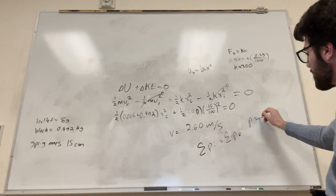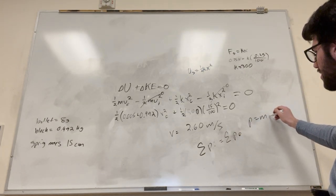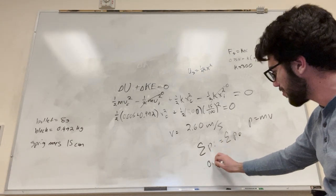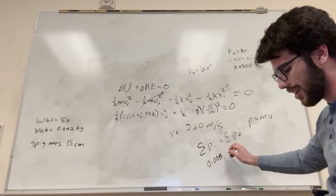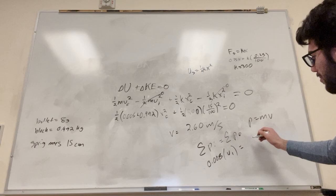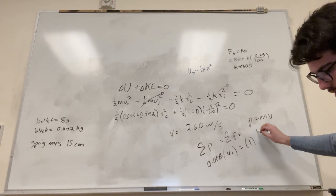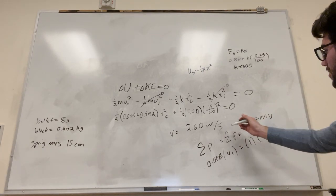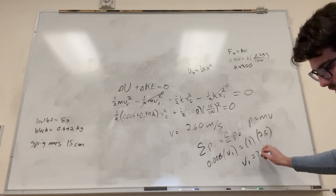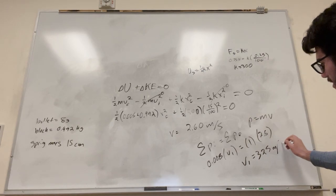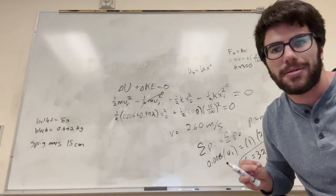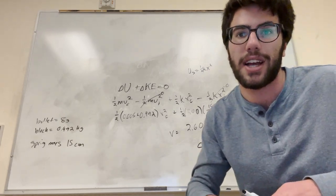Initially you get the bullet so it's 0.008 kilograms times the velocity which we want to know. And that's going to be equal to the mass of the whole system which is 1 times the velocity which you just found is 2.6. So then if you solve for velocity you'll get velocity is equal to 325 meters a second. Yep. And that's how you find that part. Okay so yeah that's how you do it. Good luck on your physics homework guys.